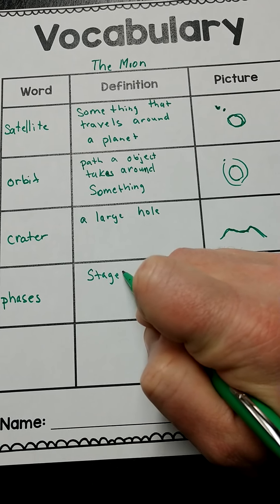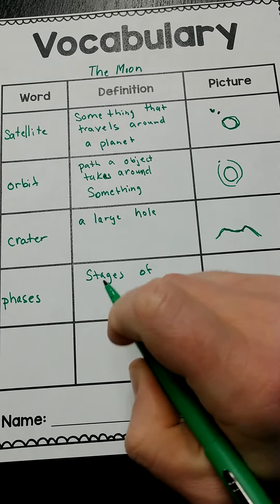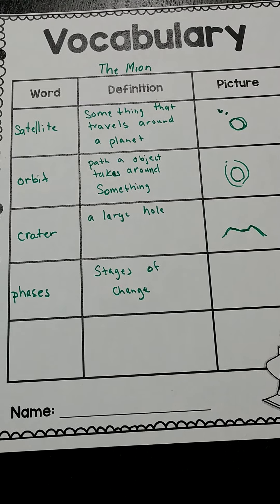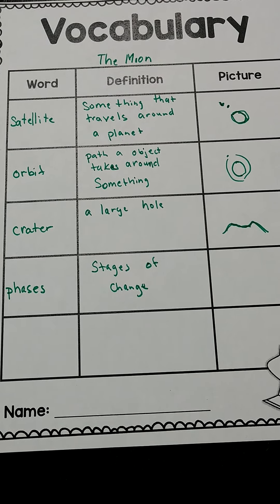This is the vocab for the moon article. I'm going to write that up there — the moon article. A satellite is something traveling around a planet, something that travels around a planet.